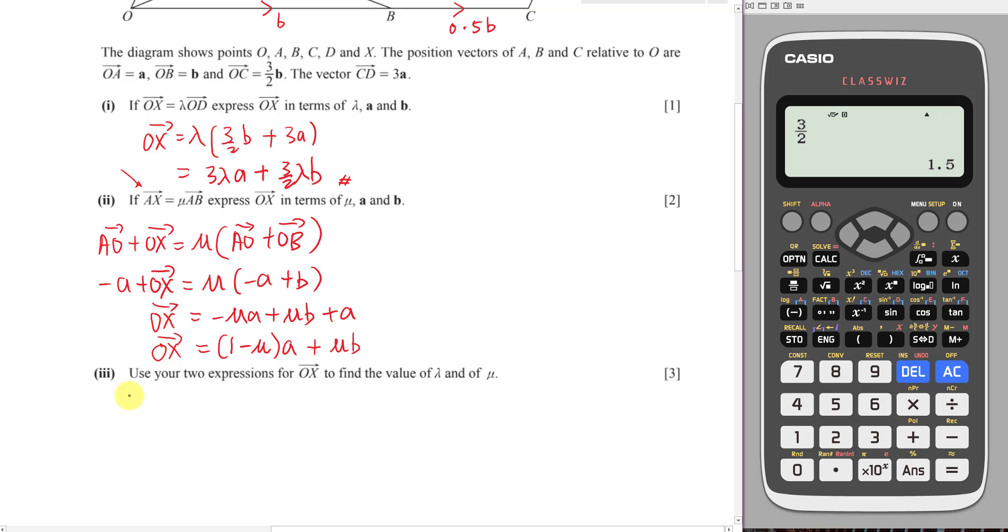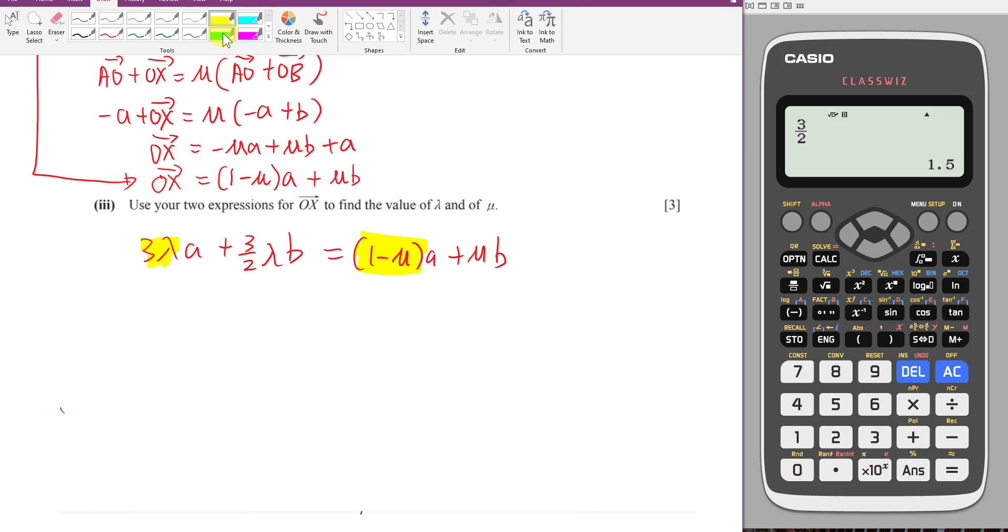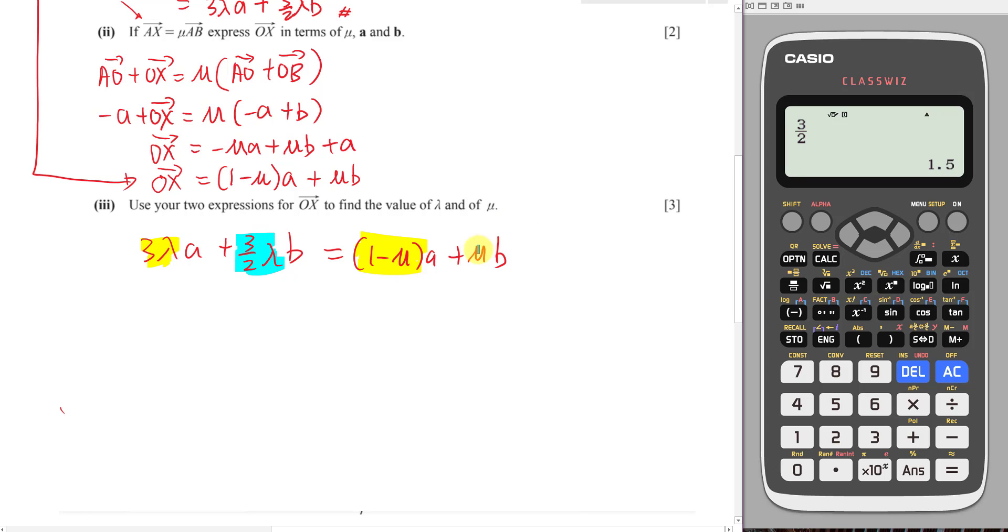Then part 3, they ask you to use the two expressions of OX to find the value of lambda and mu. This is the reason why I want to leave like this, because right now I want to sub OX into the OX to do the comparing of A and B. So the first OX I have is 3 lambda A plus 3 over 2 lambda B. Then the next OX is 1 minus mu A plus mu B. Then what I want to do next is I want to compare the A, which means I'm comparing the number beside the A, and then I want to compare for B.